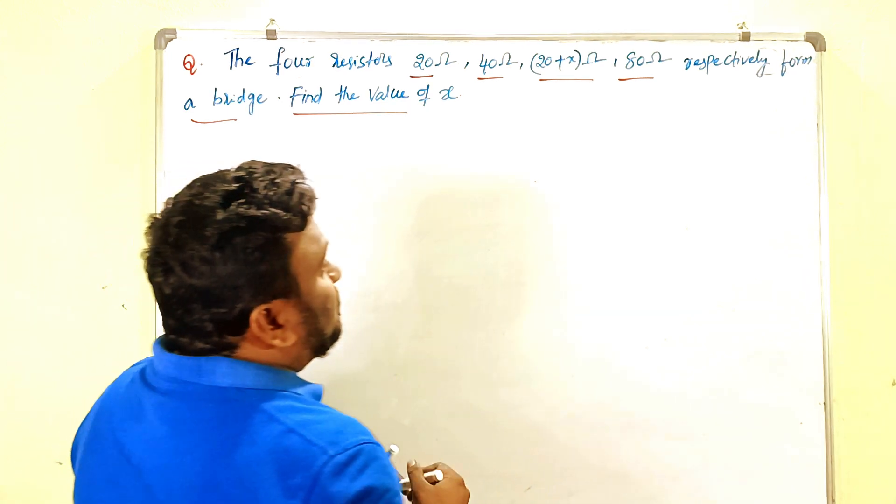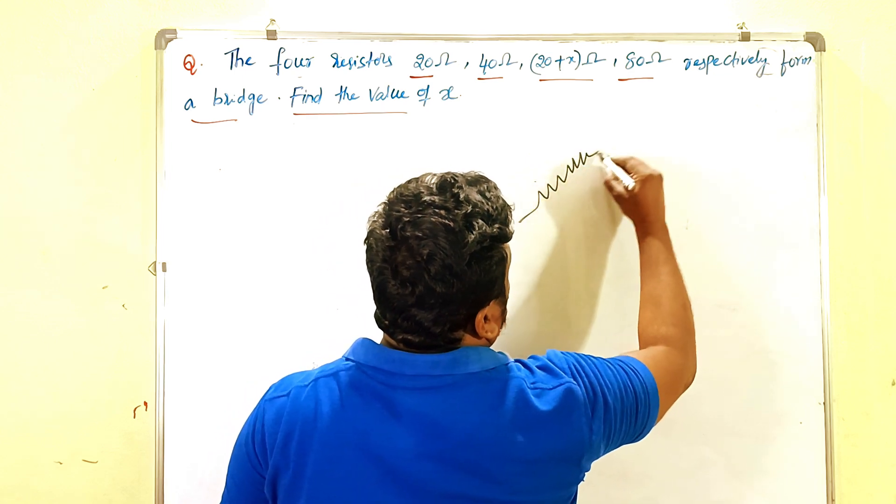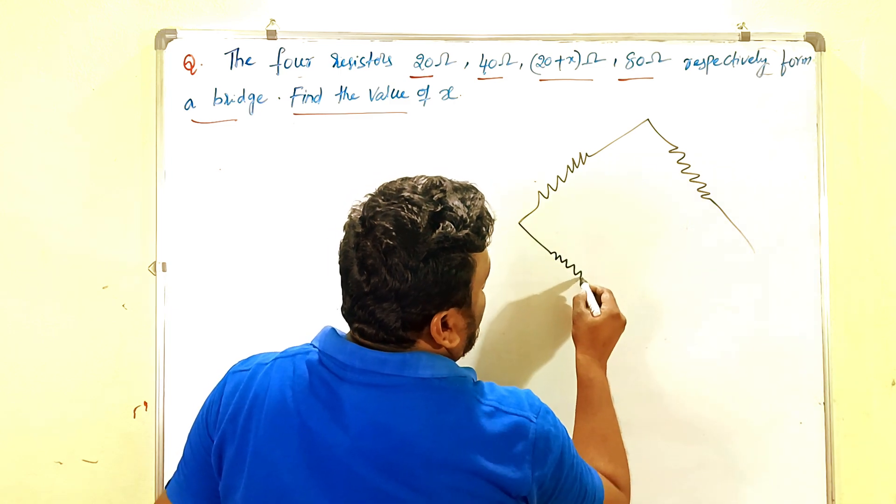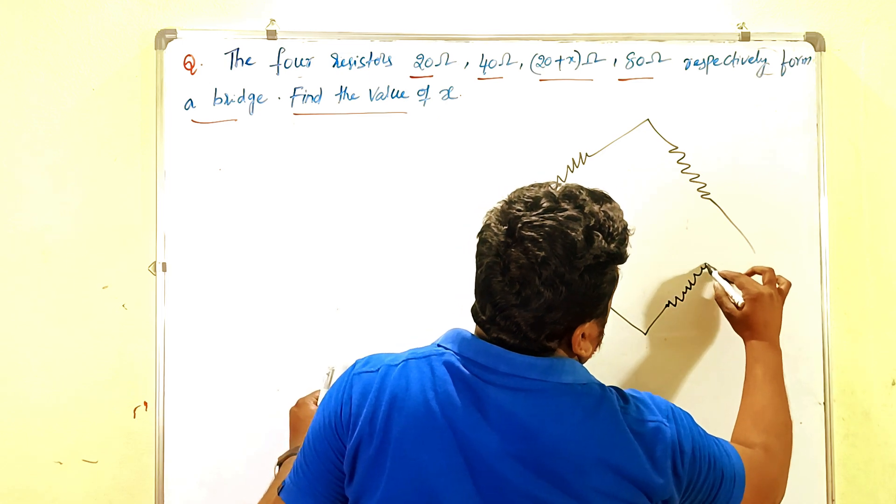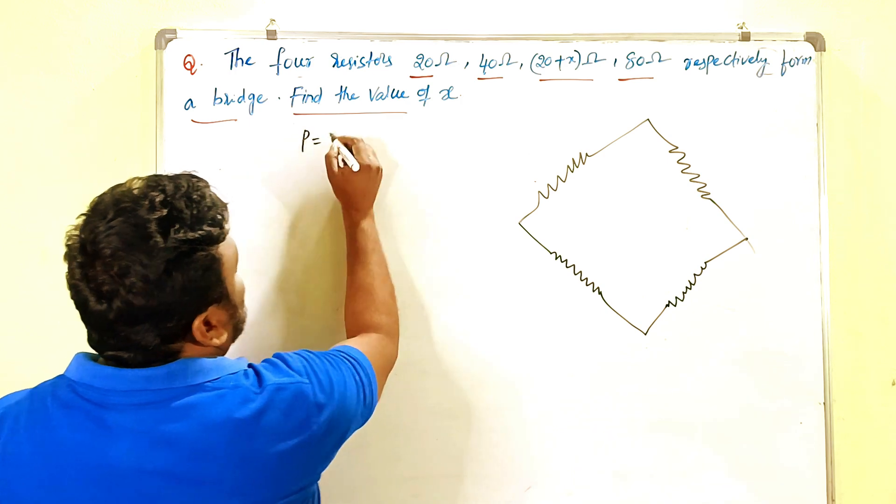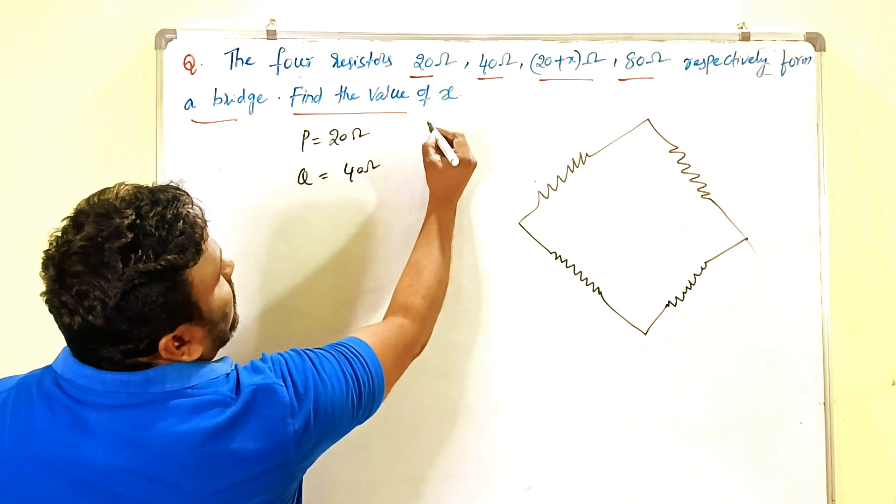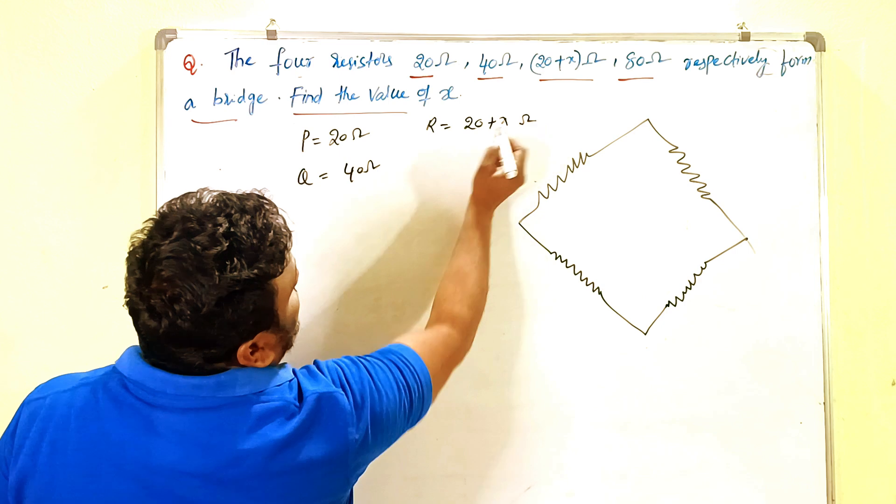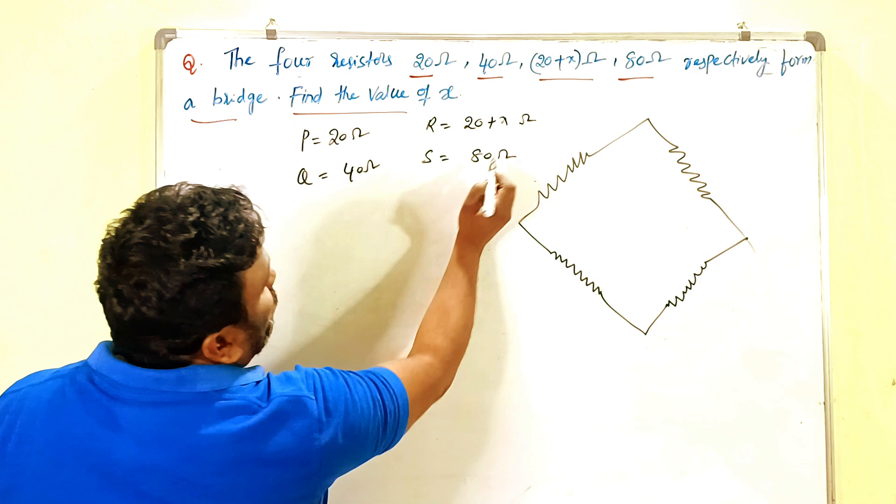So children, there are four resistors in the Wheatstone bridge. It will be found like this: the given values should be P is 20 ohms, Q is 40 ohms, R is 20 plus X ohms, and S is 80 ohms.